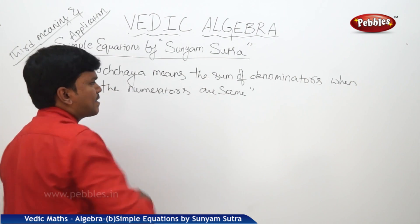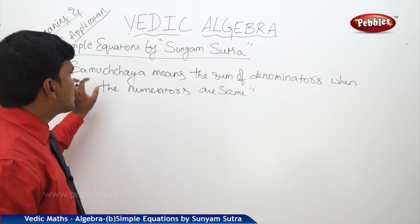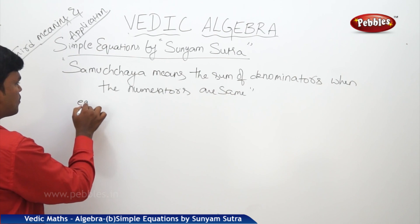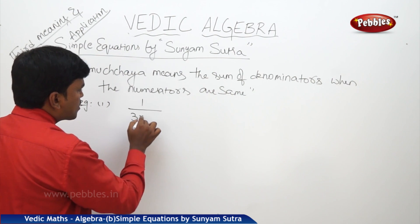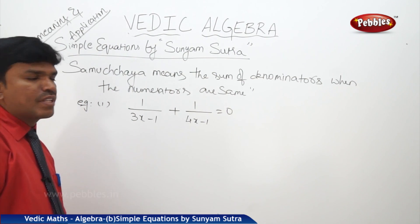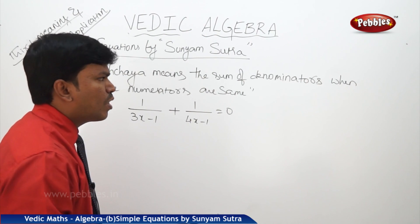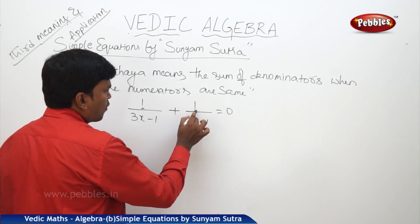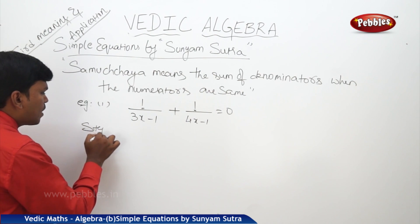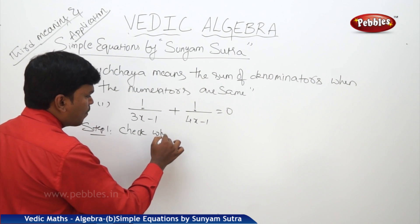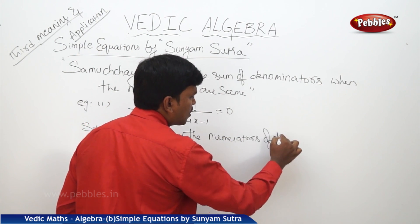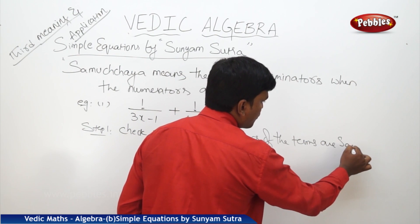Let us see one example for the third meaning. The third meaning of Samuchaya is: the sum of the denominators when the numerators are equal. Consider: 1/(3x − 1) + 1/(4x − 1) = 0. If you observe the numerators of both terms, here also 1 and here also 1. Step 1: check whether the numerators of the terms are the same or not.